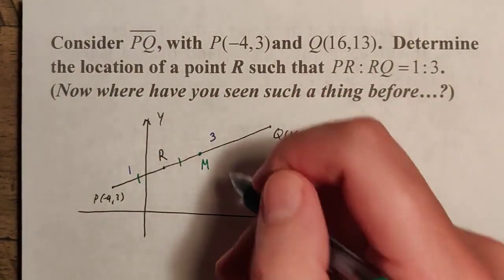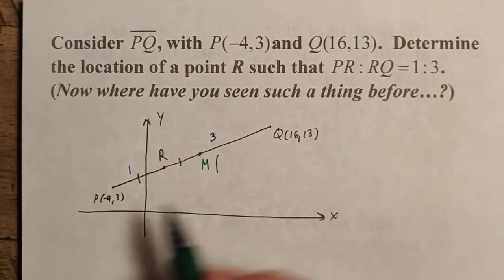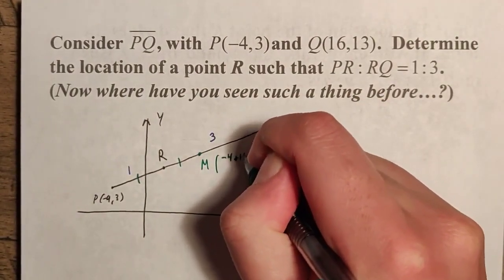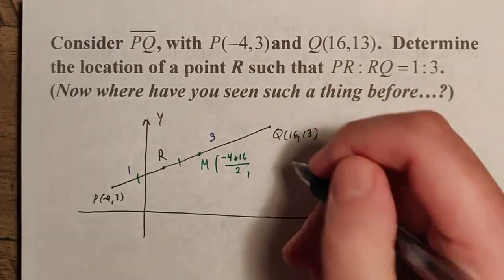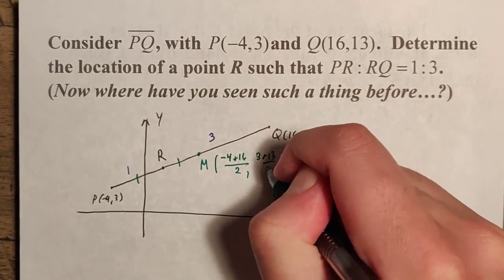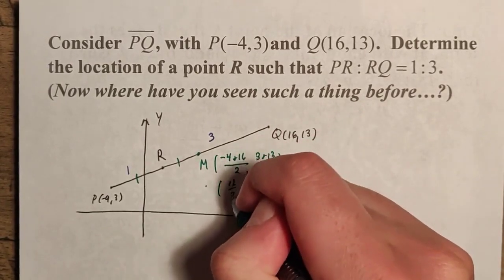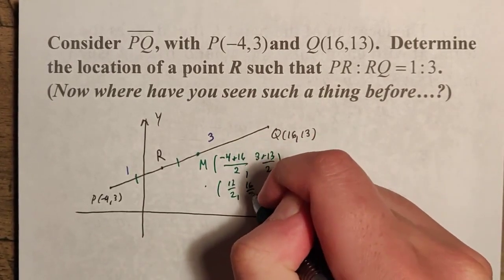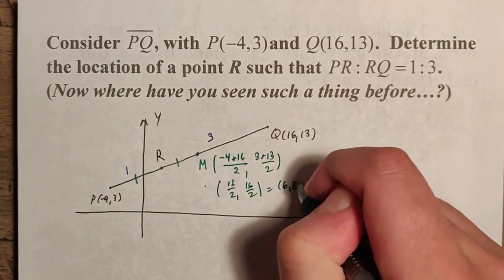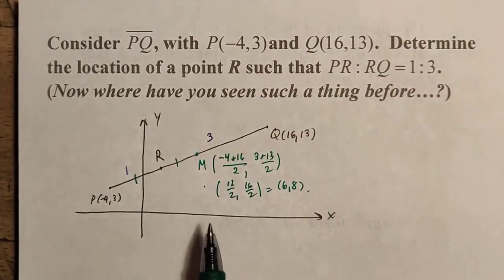I apologize, my diagrams might not necessarily be to scale, but that's okay. So M, as you can see here, is just a midpoint. Remember, our midpoint form is just the average of the coordinates. So it's negative 4 plus 16 over 2, and then we have 3 plus 13 over 2. That is 12 over 2 comma 16 over 2, which yields 6, 8. So that means M is going to be at the point 6, 8.